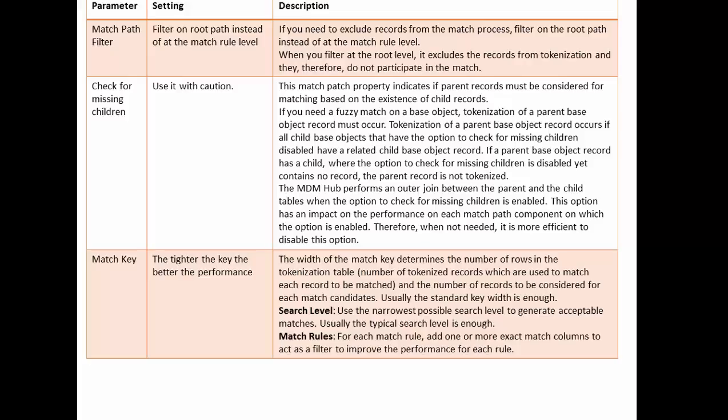Next is 'Check for Missing Children' — use it with caution. This is a base object configuration property. The match path property indicates that a parent record must be considered for matching based on the existence of a child record. If you need a fuzzy match on the base object, tokenization of the parent base object record must occur. Tokenization of the parent base object record occurs if all child base objects have the 'Check for Missing Children' option disabled. This is a very critical property with respect to match job performance, so use it with care.